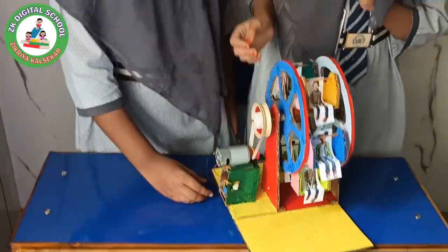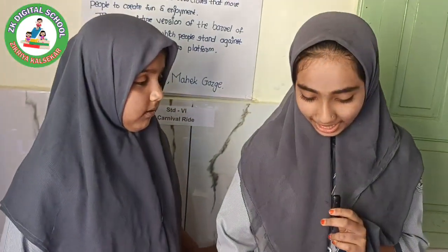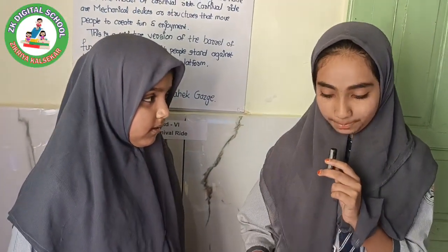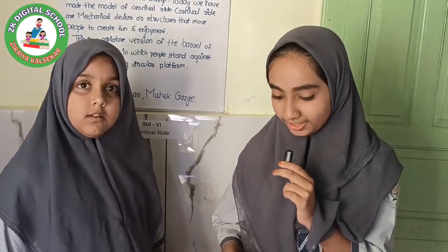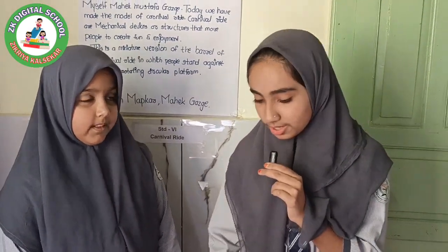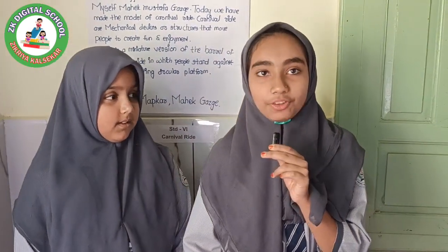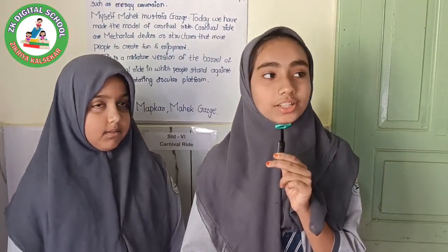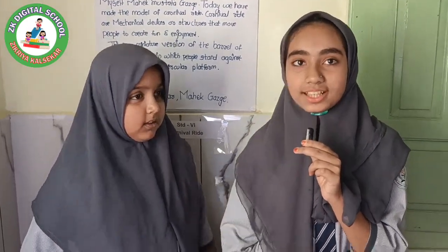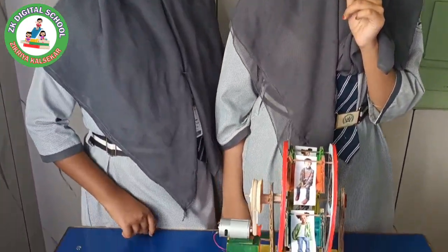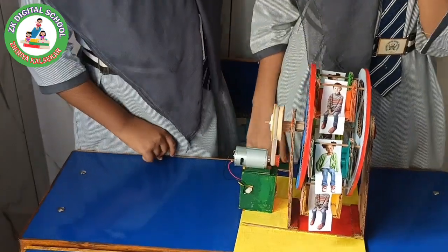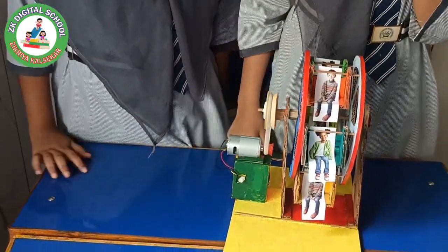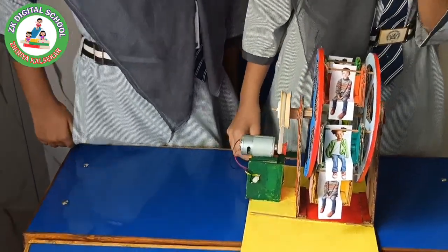We have made this model with the help of a carbon paper battery to make the Carnival Light model. Circuit concepts expose the scientific concept of energy including light, sound, and motion while using sustainable material.